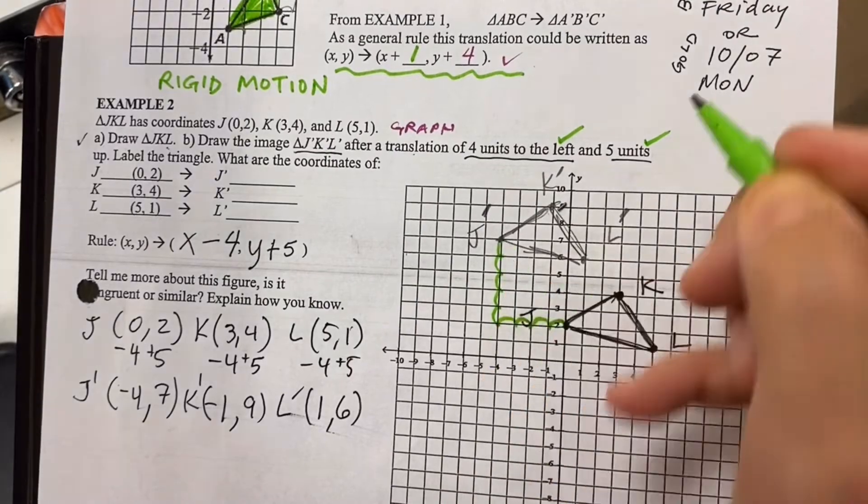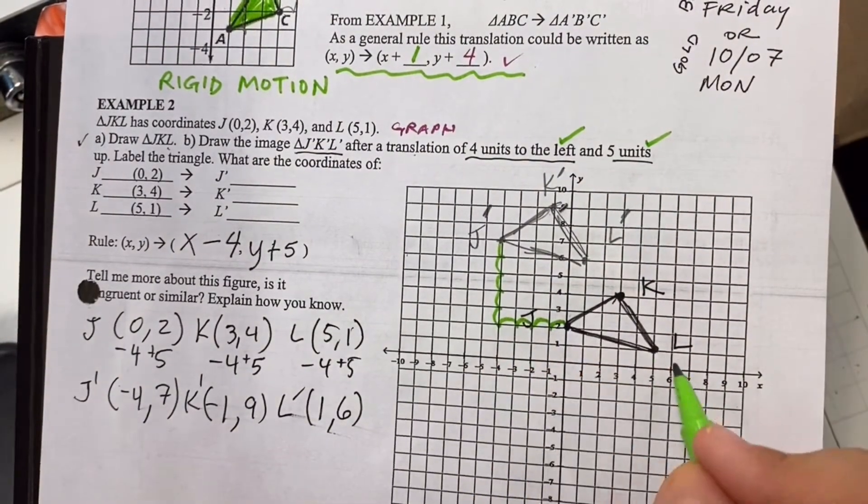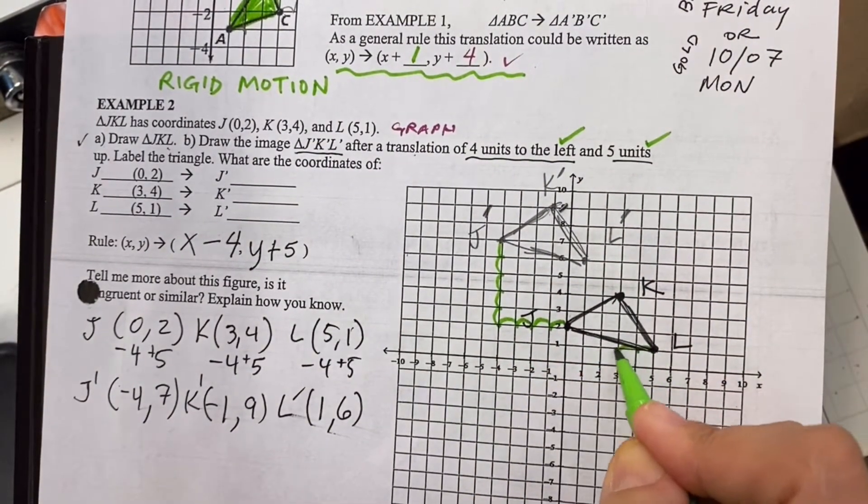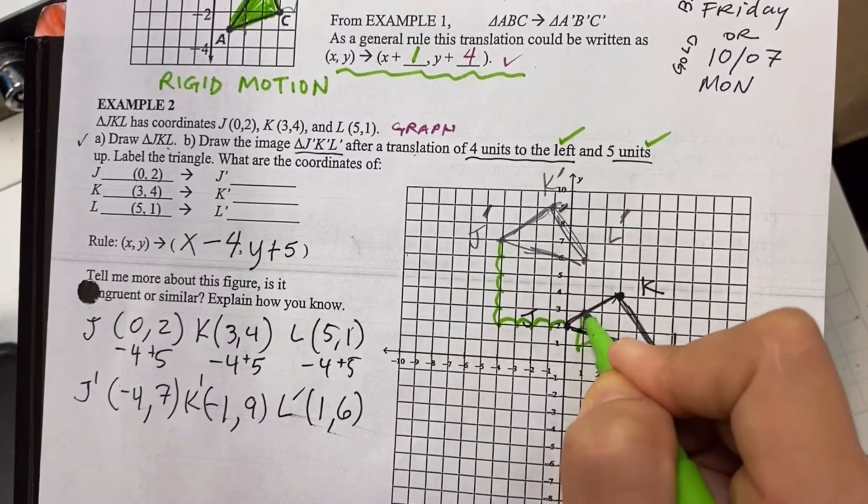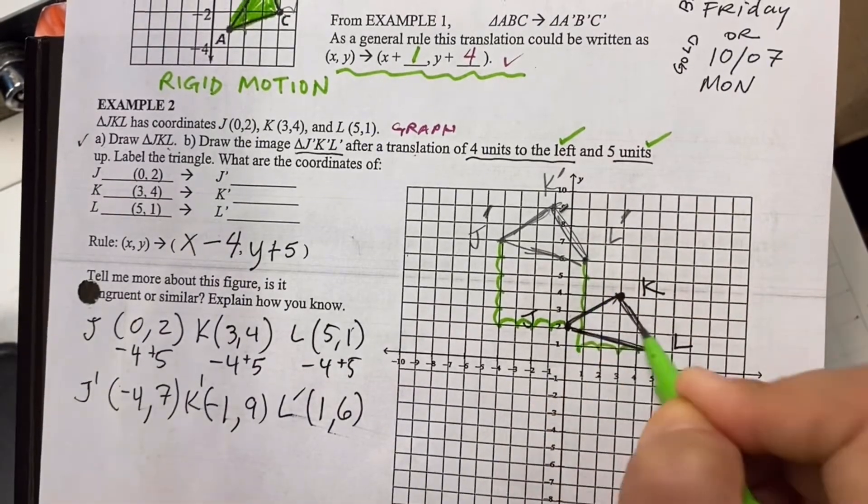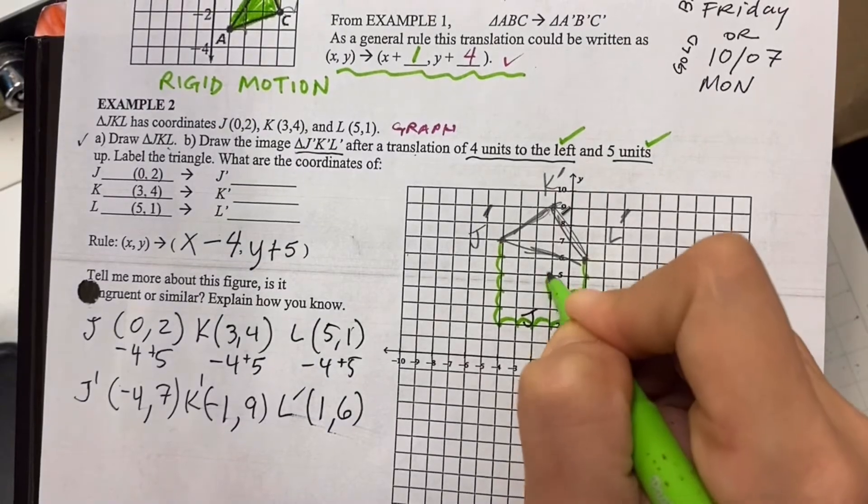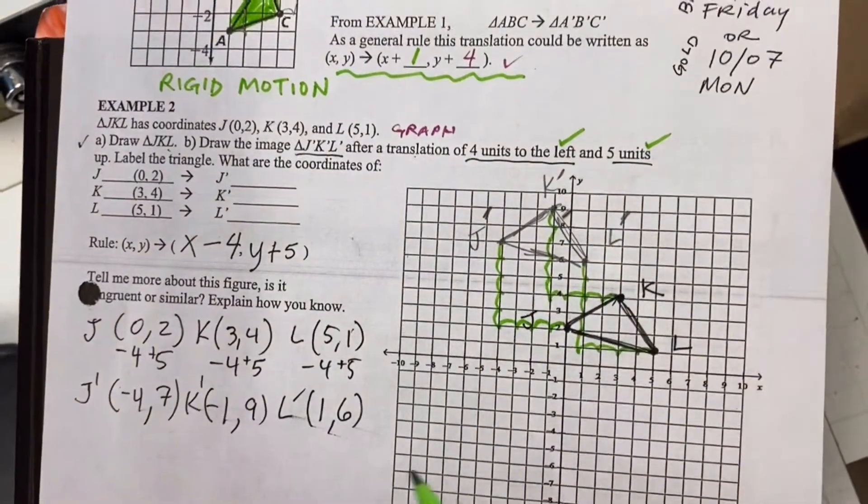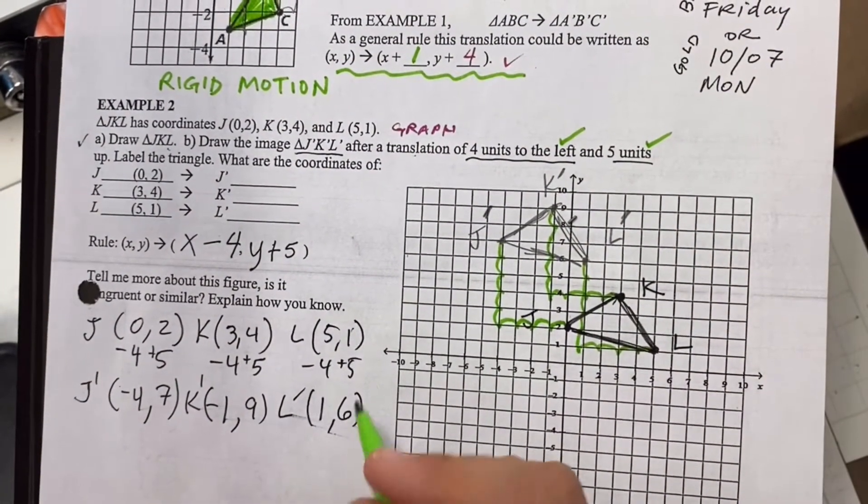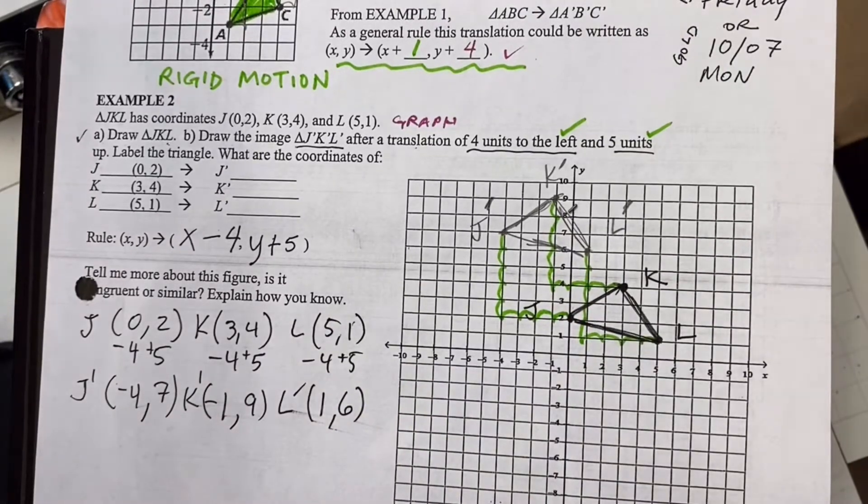And five up. One, two, three, four, five. Yep, so I got this right. L moved left four, one, two, three, four, up five. One, two, three, four, five. Yep. Left four, up five. Beautiful. So I did what they asked me to do, and now I know for sure, excuse me, since I checked it in two ways, I know these coordinates are correct.